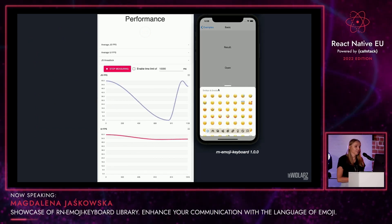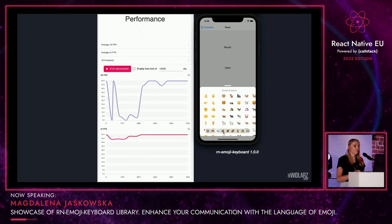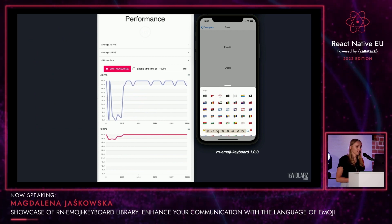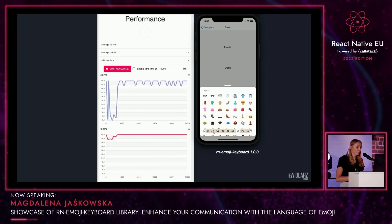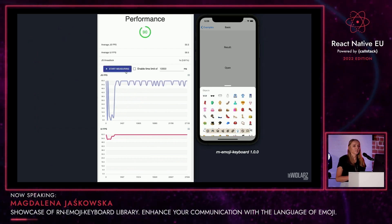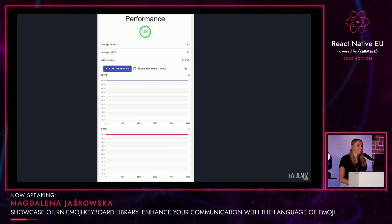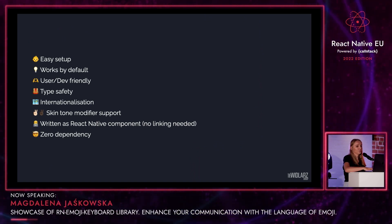We recently released a new version of the library — lots of breaking changes in that one. The team put a lot of effort in order to achieve our best score so far. With all the recent improvements we were able to significantly reduce the drop in JS FPS, especially on the category change — it's pretty stable. The UI FPS looks like a straight line. We end up with a final score of 90. Our ultimate goal is yet to be achieved — and that's what we're aiming for. So I hope you can agree with me that we can add one more point to the list: an emoji keyboard is performant.